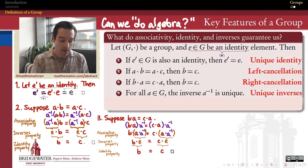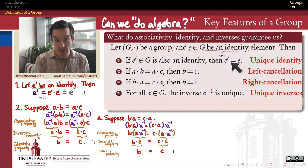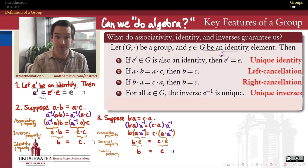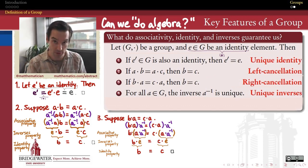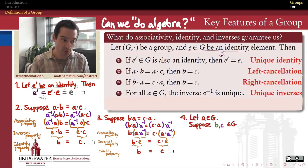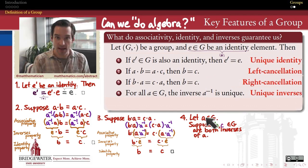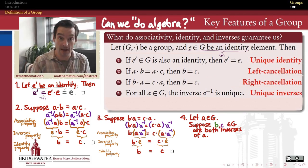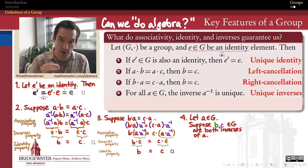The next property tells us that not only is the identity element in a group unique, but also that every element in the group can't have more than one different inverse. We know every element has an inverse — that's the inverses property in the definition — but this tells us that an element can't have more than one different inverse; inverses are unique. As with every uniqueness proof, we begin by supposing we have two inverses. Let's suppose I pick an element A, and you hand me two elements B and C, and tell me both are inverses for A.